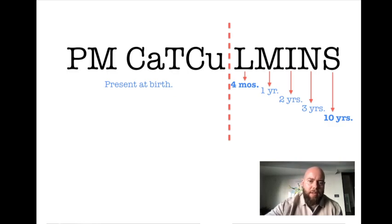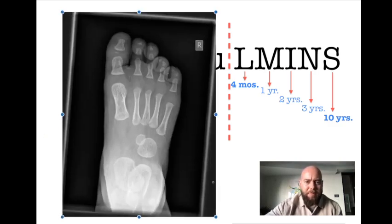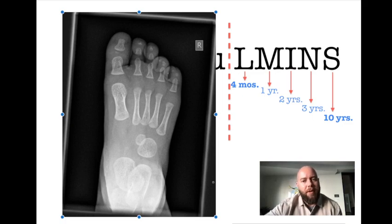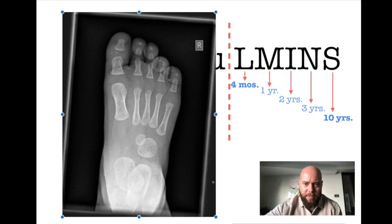Let's try an example. Here's an x-ray of a pediatric foot. The midfoot is where we're focusing our attention. To the far right in the midfoot you see a large circle with a smaller circle to the left — the larger one is the cuboid, which is present at birth and doesn't help you. The next bone visible on our L-M-I-N-S portion of the mnemonic is L for lateral cuneiform. So this patient is four months old.